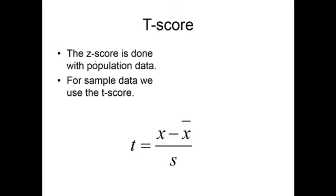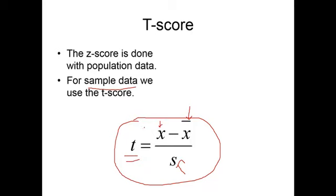The t-score is done with a very similar formula. We use sample data. We still have the x, the data item. We've got the sample mean and the sample standard deviation. So t is going to be an estimator for z. This is our random variable z.